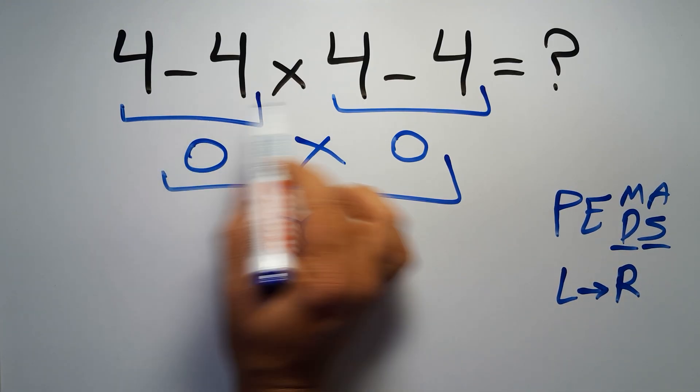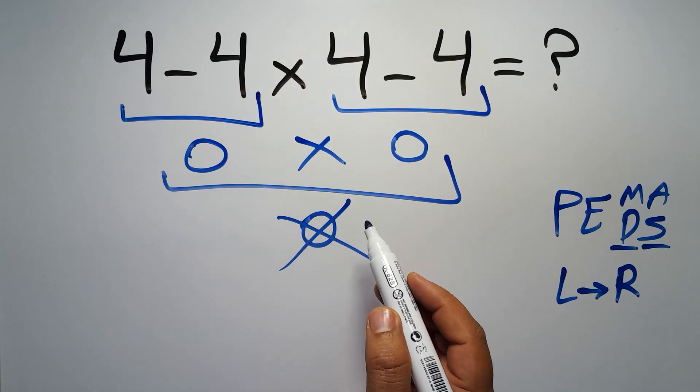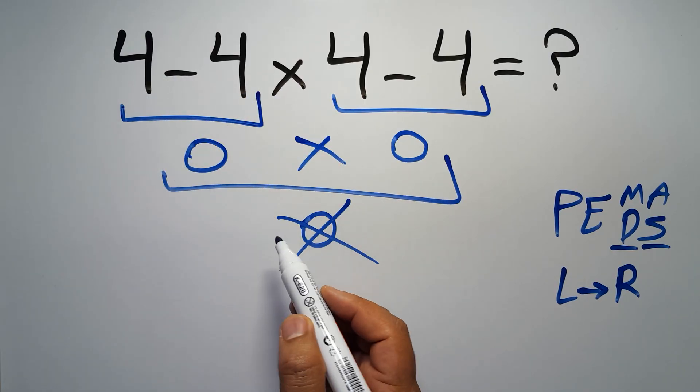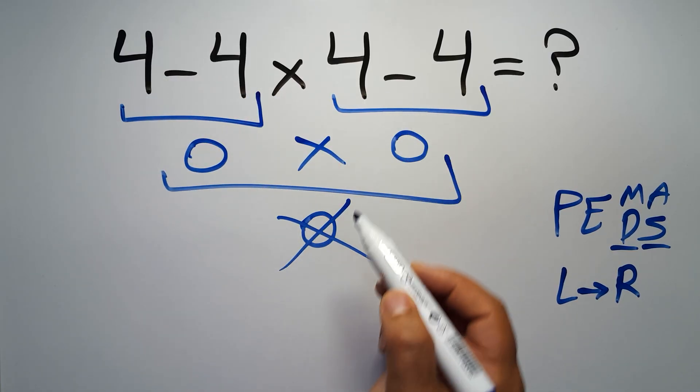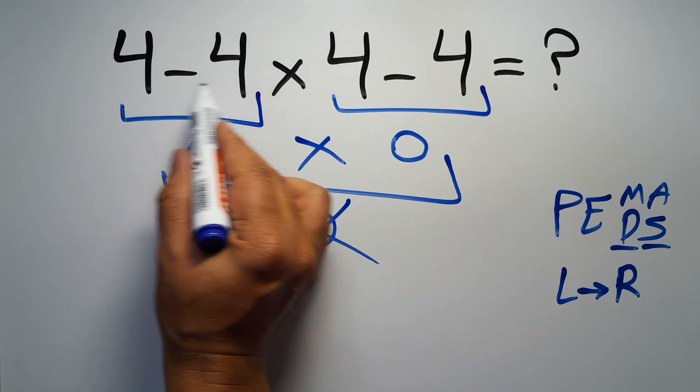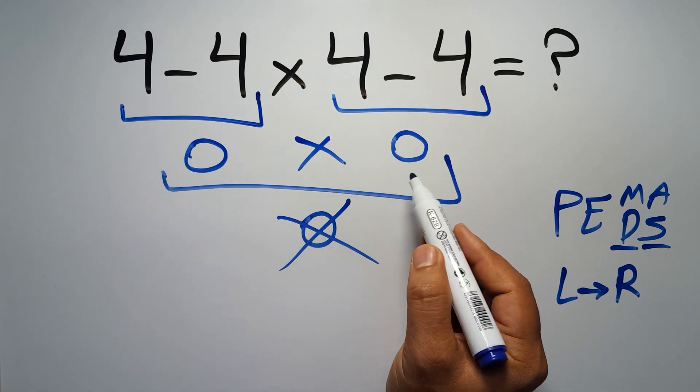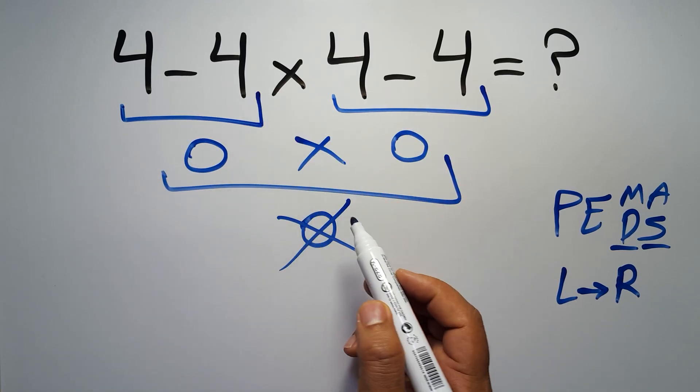So here first we have to do this multiplication, then this subtraction, and finally this subtraction. If we do this subtraction or this subtraction before this multiplication, it is wrong.